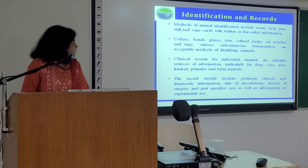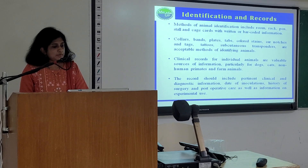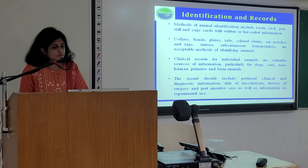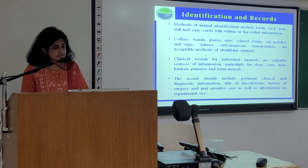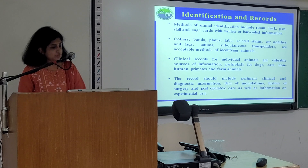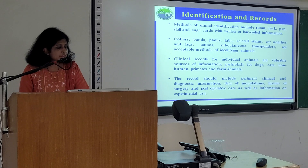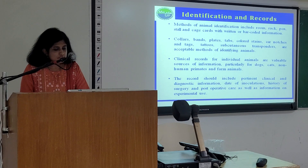Identification and records are very important. Methods of animal identification include room, rack, pen, stall and place cards with written or barcode information; collars, bands, plates, tabs, colored stains, ear notches and tags; tattoos; and subcutaneous transponders, which are acceptable methods of identifying animals. Linkage records for individual animals are valuable sources of information, particularly for dogs, cats, non-human primates and farm animals.